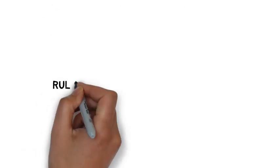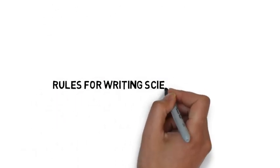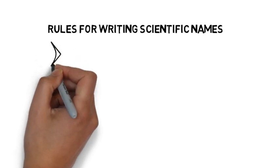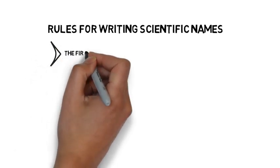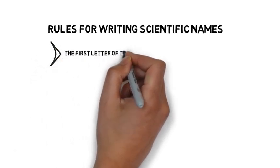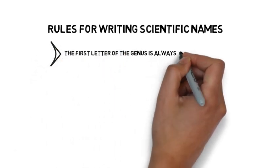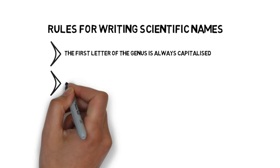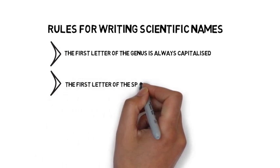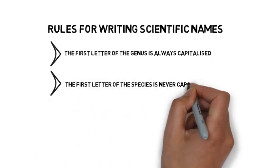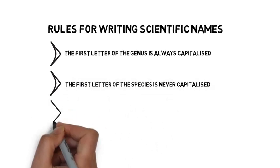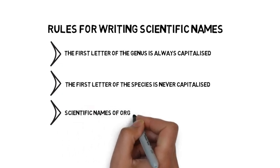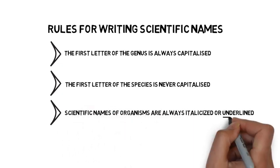The rules for writing scientific names are as follows: The first letter of the genus is always capitalised. The first letter of species is never capitalised. Scientific names of organisms are always italicised or underlined.